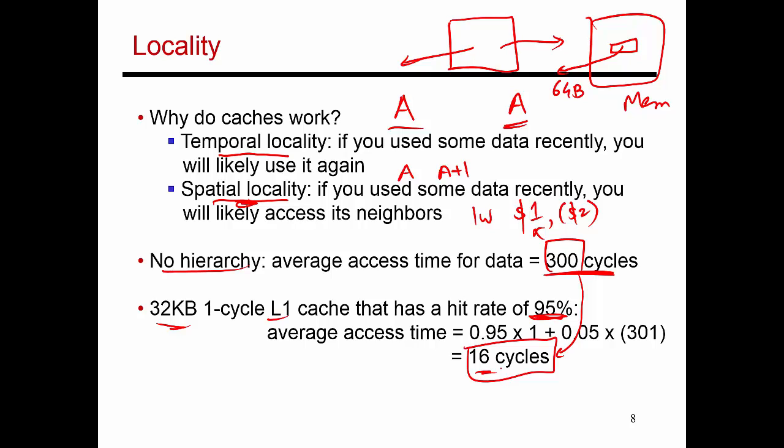How would I get the 16 number? Let's say that I'm executing 100 loads. Out of those 100 loads, 95 of them are going to be cache hits because of this 95% hit rate. Those 95 accesses are going to be serviced in a single cycle, so they won't introduce any additional stall cycles in my five-stage pipeline. But five of them are not going to find data in the L1 cache. In addition to spending that one cycle looking up the L1, you're going to spend 300 more cycles getting the data from memory. So on average, a load is going to take 16 cycles based on this equation here.